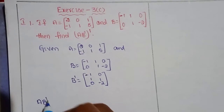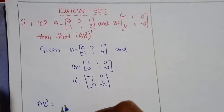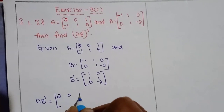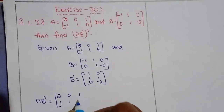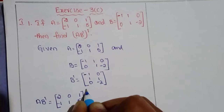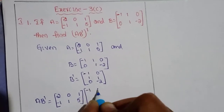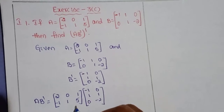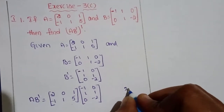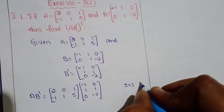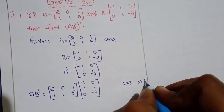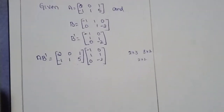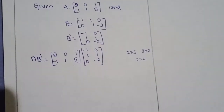We compute A into B transpose. A matrix [2, 0, 1; -1, 1, 5] multiplied by B transpose matrix [-1, 0; 1, 1; 0, -2]. This A matrix has order 2 rows by 3 columns, and B transpose has order 3 rows by 2 columns, so the result is a 2 by 2 matrix.